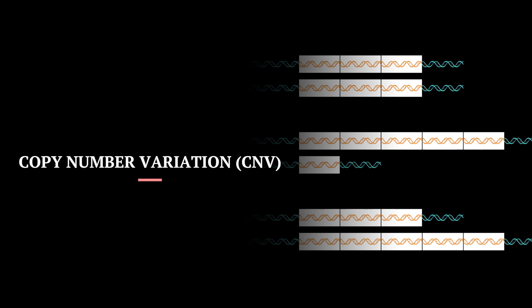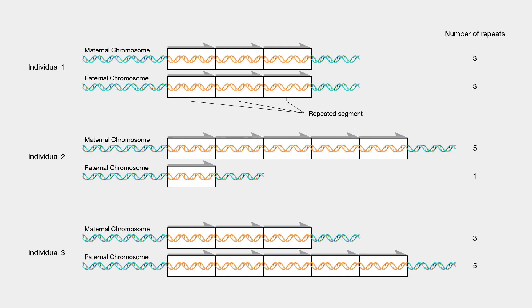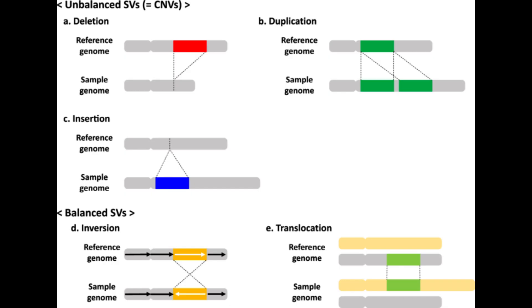The first most important term is copy number variation, or CNV. Copy number variation refers to a circumstance in which the number of copies of a specific segment of DNA varies among different individuals' genomes. The individual variants may be short or include thousands of bases. These structural differences may have come about through duplications, deletions, or other changes and can affect long stretches of DNA. Such regions may or may not contain a gene or genes.